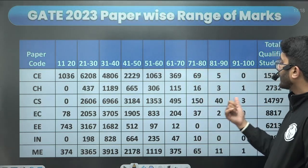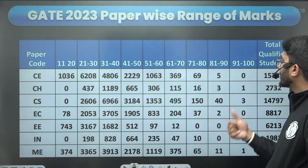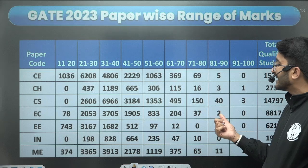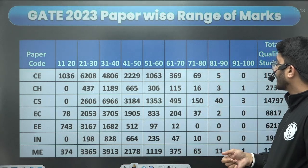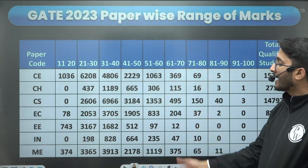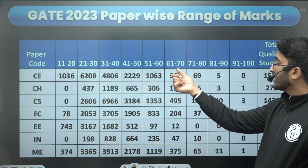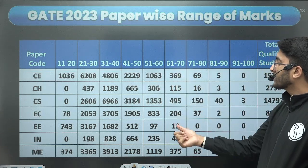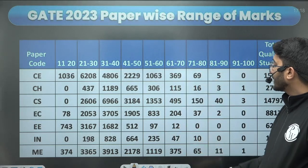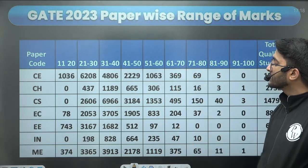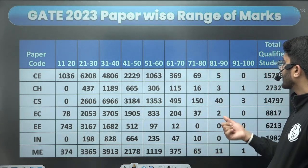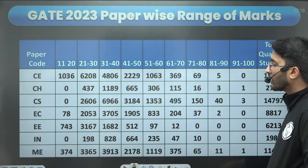For CS in GATE 2023, 81 to 90, around 40 students are there. For EC, two students are getting marks between 81 to 90 and 37 students between 71 to 80. For Electrical, 61 to 70, around 21 students. For IN, 71 to 80 around 20 students and 61 to 70 forty-seven students. For Mechanical, eleven students are getting marks between 81 to 90 and one student between 91 to 100.